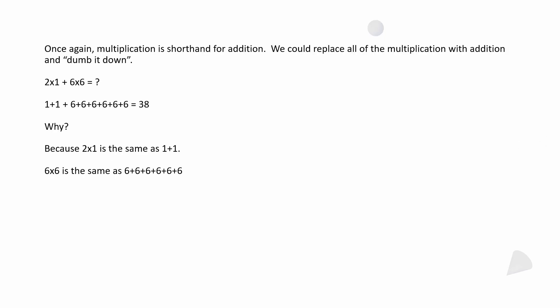Another way to verify: multiplication is shorthand for addition, so you could replace all of the multiplication with addition. You're still going to get the same answer. Two times 1 means you're adding 1 twice: 1 plus 1. Six times 6 is the same as 6 plus 6 plus 6 plus 6 plus 6 plus 6. If you add all that up, you're going to get 38 — the same answer as when we followed order of operations.